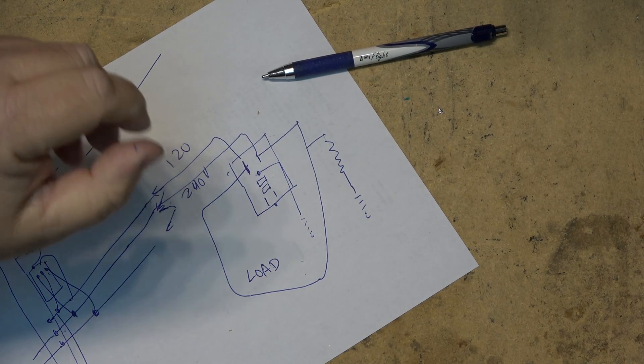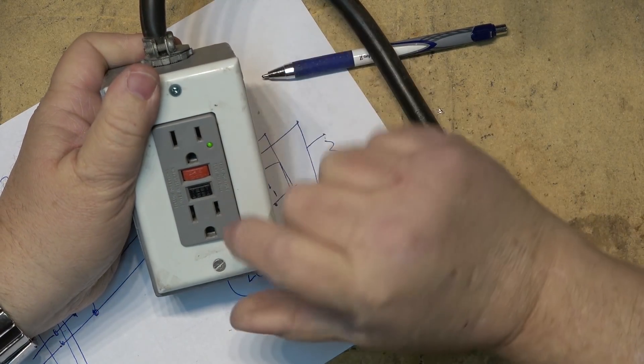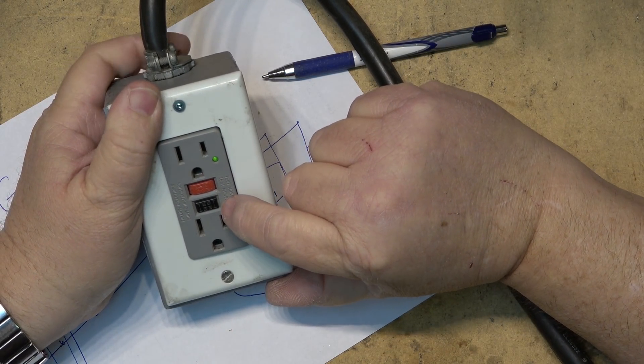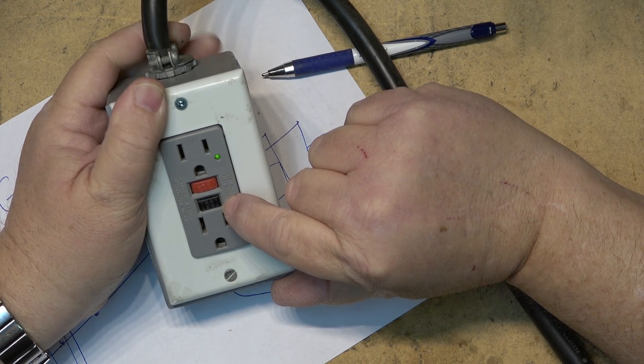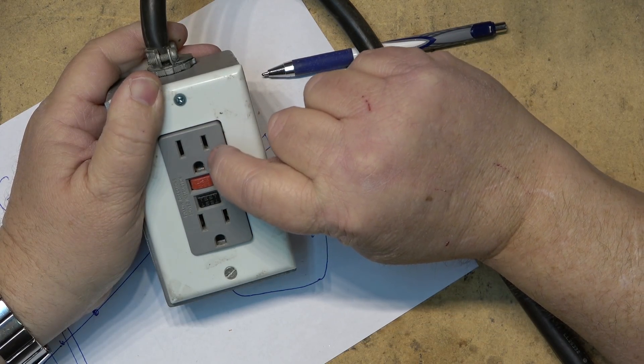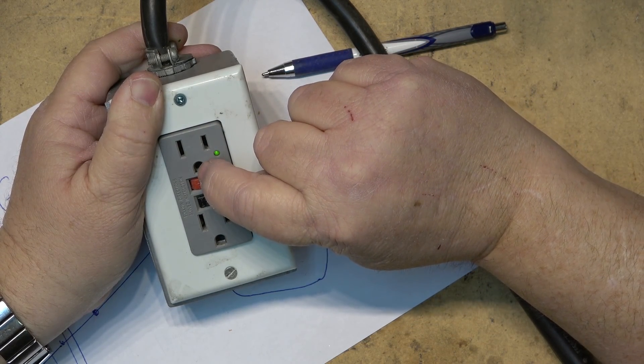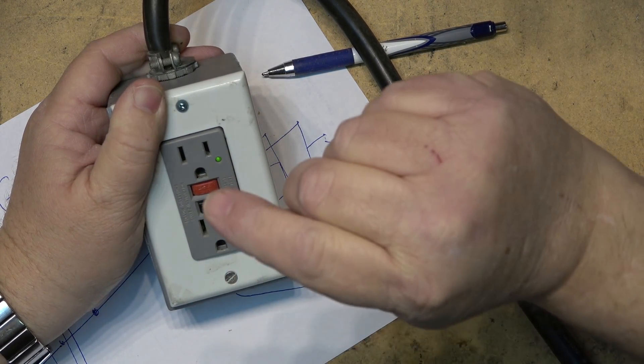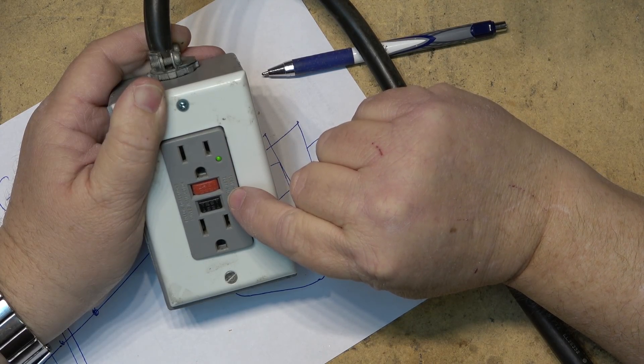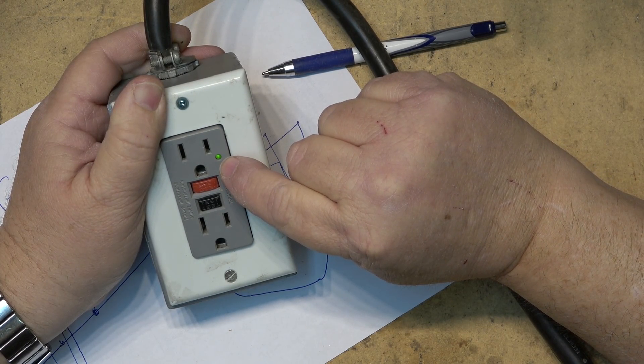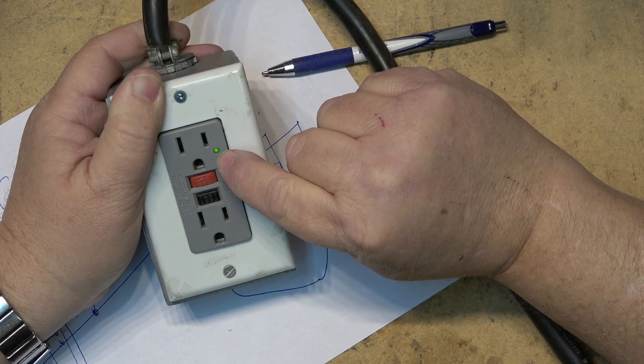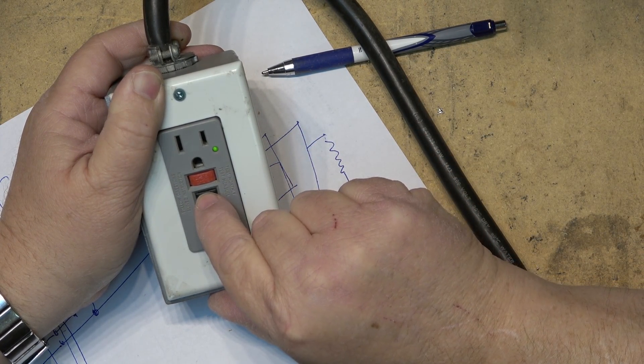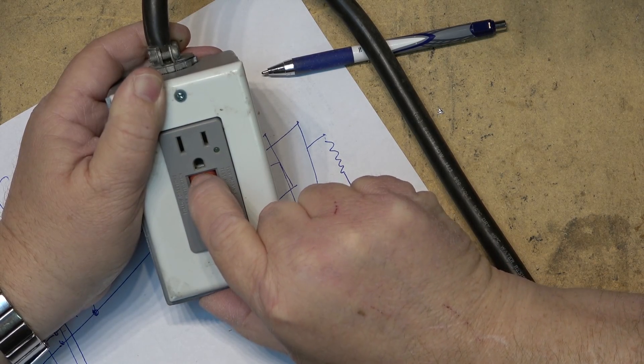When you press the test button, what you are in effect doing is providing about a 22k ohm resistor between the hot side and the ground. When you press the test button, this is how you test to make sure your outlet works. Some of these are different - some will have a red light that lights up when it's in a trip condition, others will have a light that illuminates, in this case it's green when the outlet is working. When I trip it, it will turn the light out and then I can reset it.